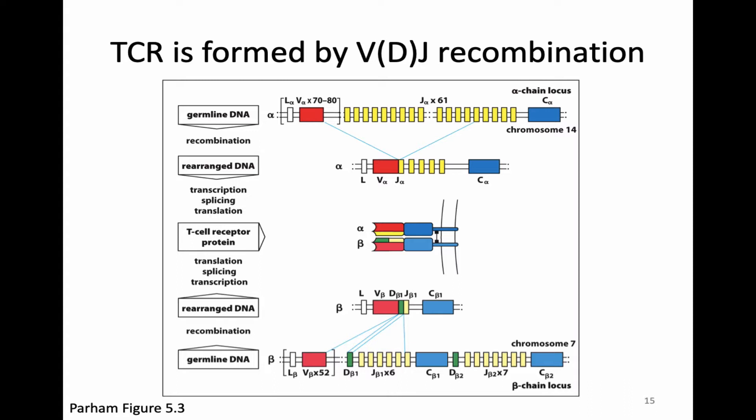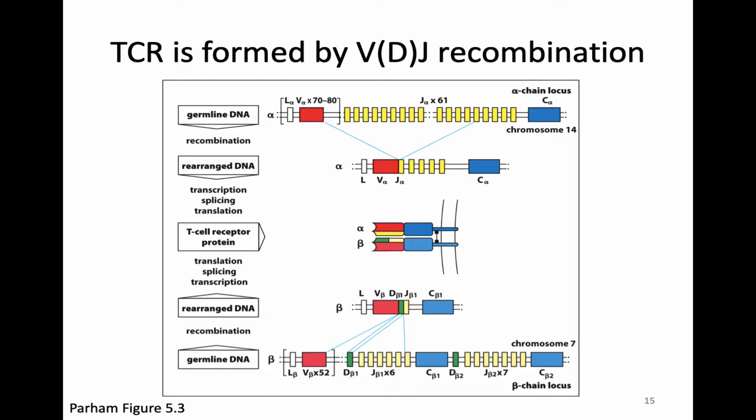For a little while, immunologists were really worried about the T cell receptor because they wondered whether it was formed by a different process of diversity than we saw with the B cell receptor. Happily, they eventually determined that the T cell receptor was also formed by VDJ recombination. The beta chain contains a V, D, and J segment as well as a constant region — it is the heavy chain — and V, D, and J come together to make the variable region of beta. Our alpha chain, which is the light chain, has a V and a J that come together through VJ recombination to make the variable region of alpha, combined with the constant region of the alpha chain.